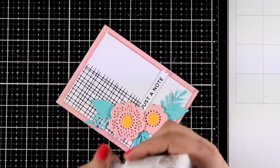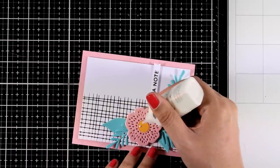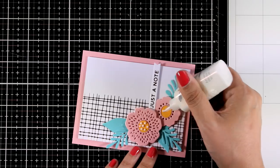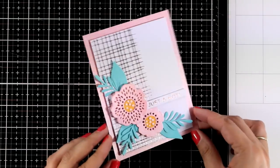I also added a sentiment which is again foiled. And as an extra touch I'm going to use my nouveau drops and add some dots at the center of the flower.